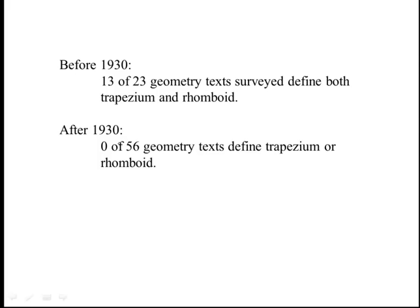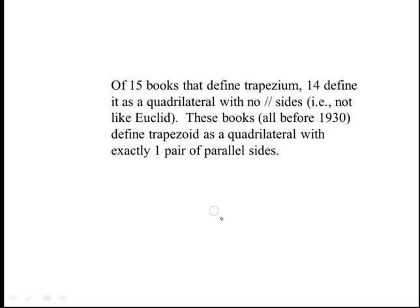Sometimes we'll have a term that has a definition but we decide we don't want to use it anymore. Of the 15 books that defined a trapezium, 14 defined it as a quadrilateral with no parallel sides — not like Euclid did. All these books, which came before 1930, defined a trapezoid as a quadrilateral with exactly one pair of parallel sides. So it takes Euclid's trapezium category and divides it into trapezoids and then everything else.